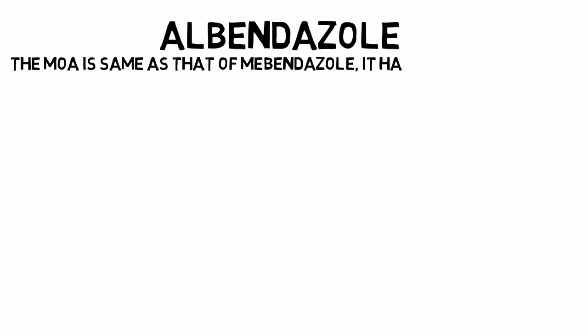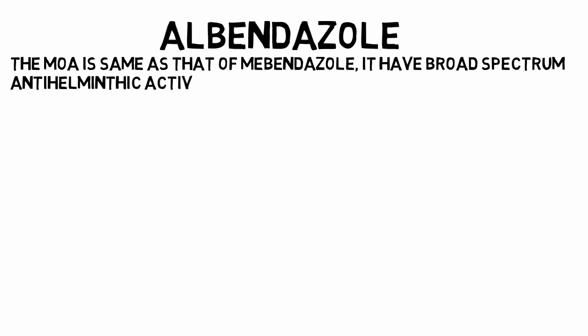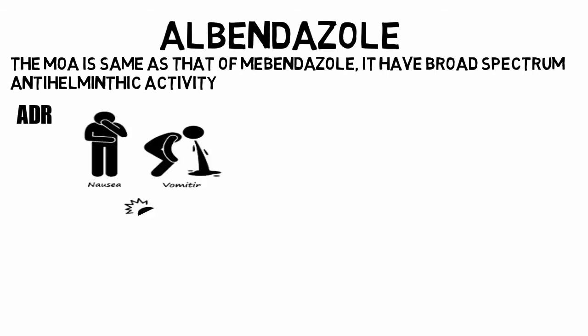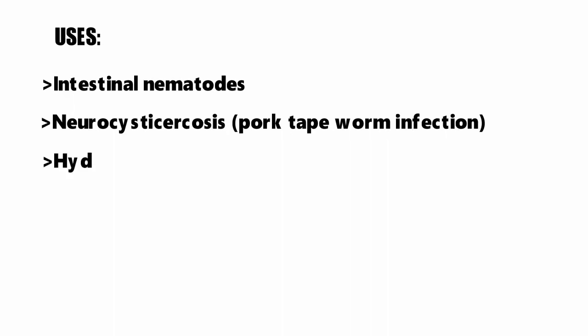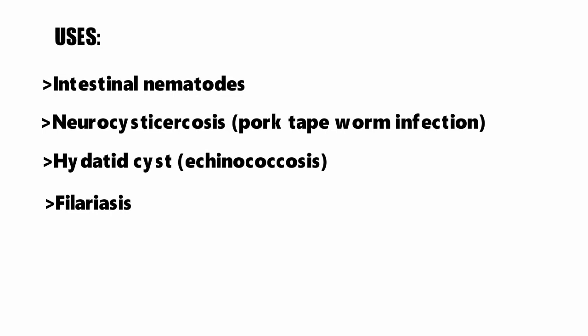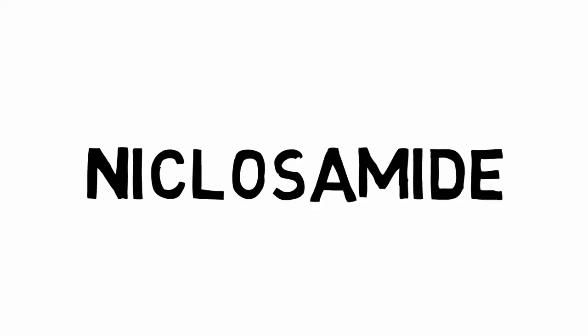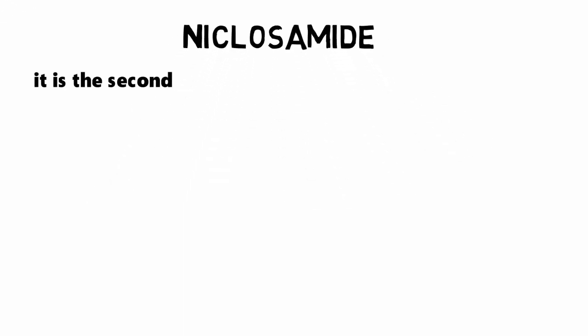The next drug is albendazole, one of the most commonly used drugs. The mechanism of action is the same as that of mebendazole, and it has broad-spectrum anti-helminthic activity. The adverse drug reactions include GI disturbances such as nausea, vomiting, and diarrhea, and long-term use can result in kidney failure. Albendazole is used in intestinal nematodes, neurocysticercosis (pork tapeworm infection), hydatid cyst caused by Echinococcus, and filariasis.